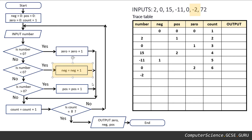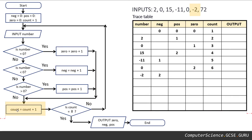Neg equals whatever it was before plus an extra one. Before it was one, so plus an extra one makes it two. Count equals its current value plus one: we're up to six, add an extra one, it's seven.